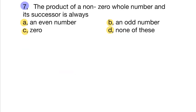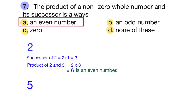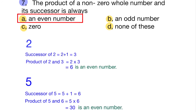Seventh question: The product of a non-zero whole number and its successor is always an even number. For example, 2 is a whole number; its successor is 3; and 2 × 3 = 6, which is even. Another example: 5's successor is 6, and 5 × 6 = 30, which is also an even number. So the statement is true.